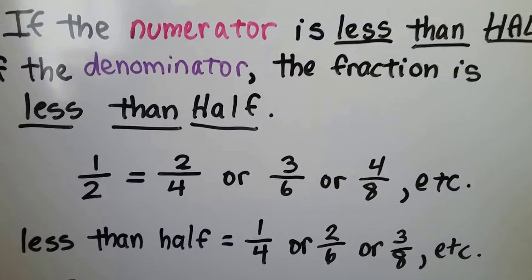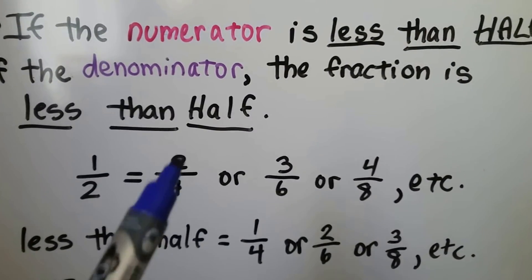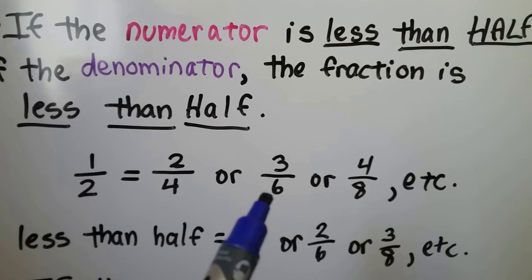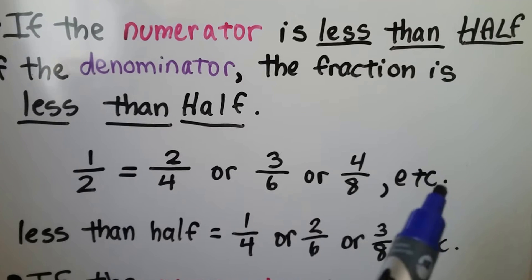We know that one half is the same thing as 2 fourths. 3 sixths would also reduce to 1 half, and so would 4 eighths, and so on.